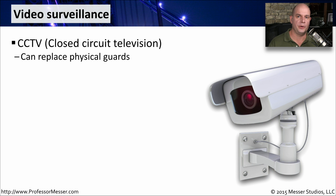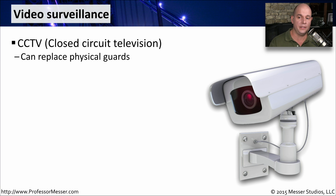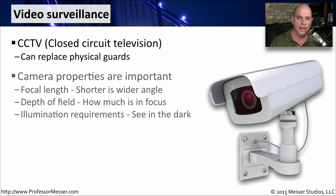Another type of physical security control is a camera. This video surveillance allows us to put cameras in very critical locations and record this information over time. This way, you don't have to have a physical person sitting and watching a particular area — you can have the entire thing automated through the video surveillance.